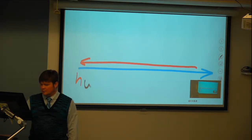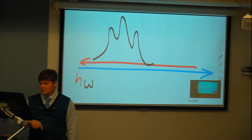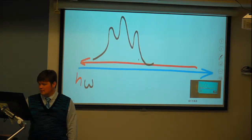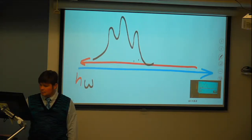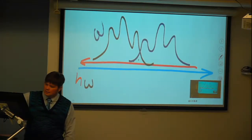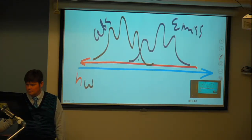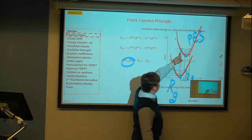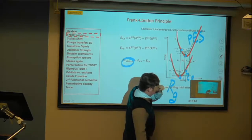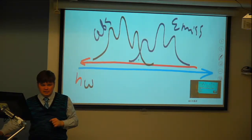The absorption spectrum occurs at higher energies and lower wavelengths, while emission occurs at lower energy or longer wavelengths. Absorption corresponds to going to different vibronic states at higher frequency; emission goes from the lowest vibronic state of the excited state to several vibronic states in the ground state. They occur at different frequencies — this is a very typical picture for experimental spectra of organic chromophores.